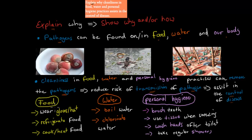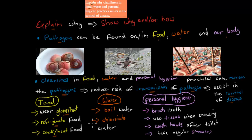When it comes to food, you need an example for food, water, and personal hygiene. For food — by wearing gloves or hats, we make sure bacteria on our skin don't get onto food. By refrigerating food, we prevent bacterial growth on food. If someone eats that contaminated food, they might get infected. And if we cook or heat food, the food will have no or fewer pathogens because they would have been killed by the heating process.